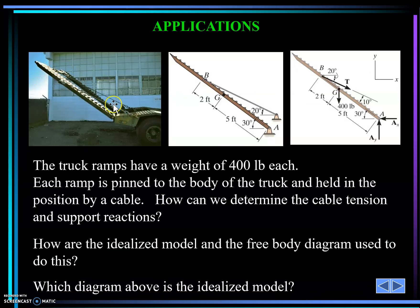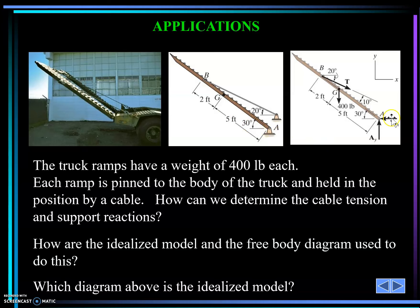Let me show you some applications. Consider a truck ramp with a weight of 400 pounds. The ramp is pinned — otherwise it would fall — and it has a cable preventing it from falling. When drawing the free body diagram: whenever you see a cable, it is subject to tension, so you cut through it and show T. Whenever a body has its own weight with uniform distribution, you come to center point G and drop W. So T for cable, W for weight, and at the pin support you develop two unknown reactions.